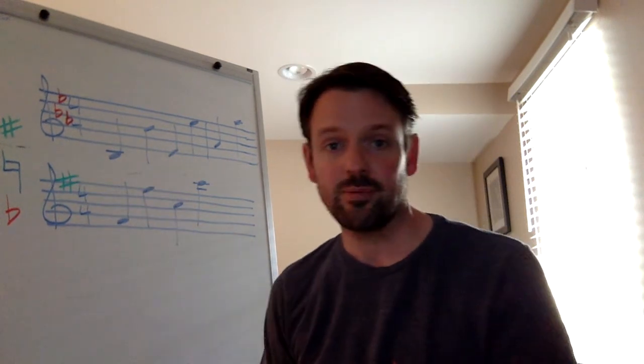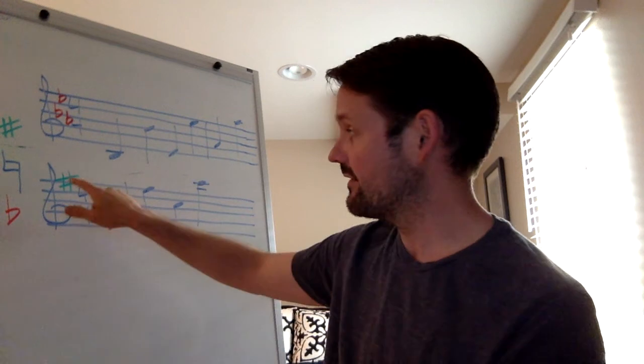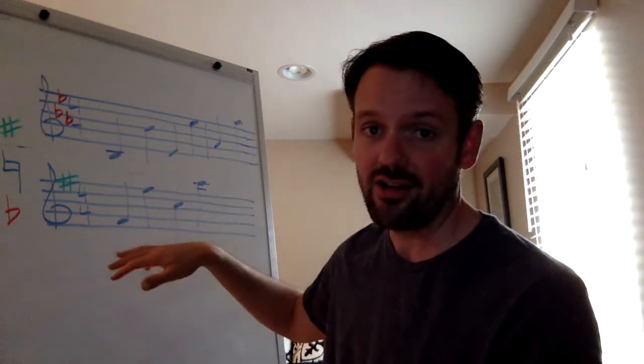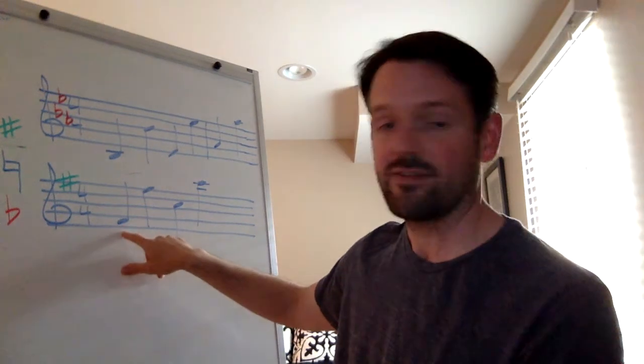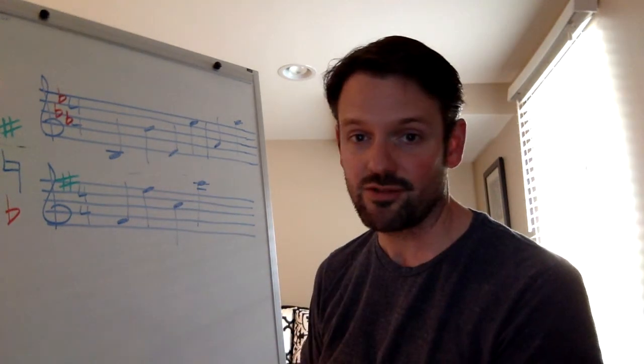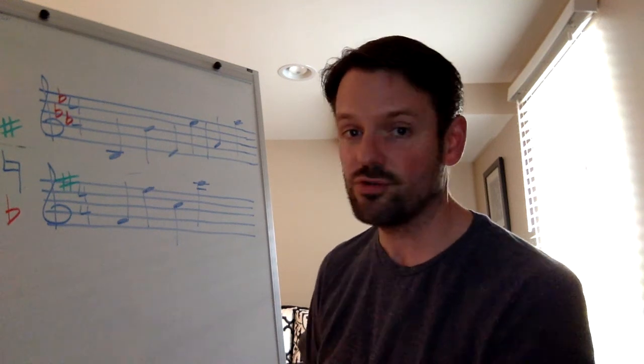So when we make the F sharp, you write it on the very top line of the staff, and it means that all F's, whether they're on the top line or not, are going to be sharp. So this is no longer F natural, now it's F sharp. This right here, the high F sharp, is F sharp as well. So you're going to have two sharps in the key signature.